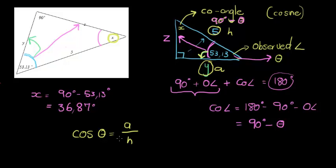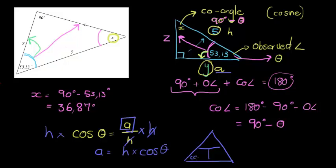Cos of theta is the adjacent over the hypotenuse. So if I multiply both sides with the h to get a on its own, because that's what I'm trying to calculate, the adjacent side, then I get that the adjacent side is the hypotenuse times cos of theta. Alternatively, you can use your rate triangle. So a rate triangle looks like this. For cos, it is cos of theta is adjacent over hypotenuse. And if I want the adjacent side, I close that with my hand and I see I need to take cos and multiply it with the hypotenuse. And that's exactly what I'm doing here.